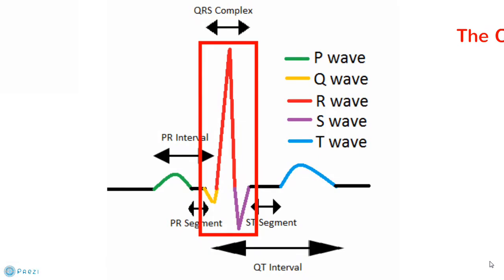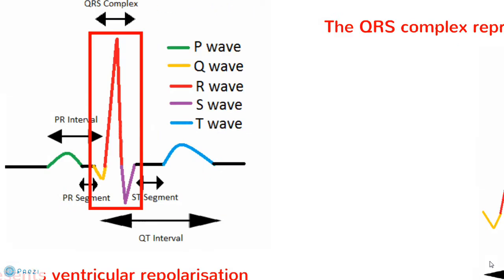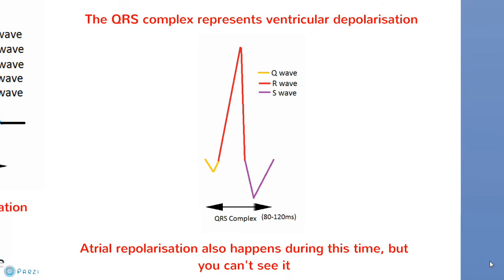Moving on to the second section, the QRS complex. The QRS complex represents ventricular depolarisation and takes 80-120ms. Due to the large amount of ventricle cells, the repolarisation of the atriums are hidden in this complex.